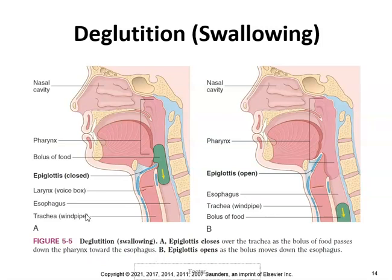The pharynx is a common passageway for both air and food. What potential problems do you see with this arrangement? The body addresses this problem by means of the epiglottis, which closes to prevent food from entering the airway.